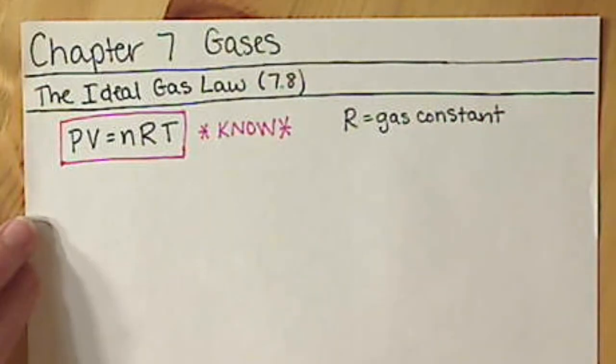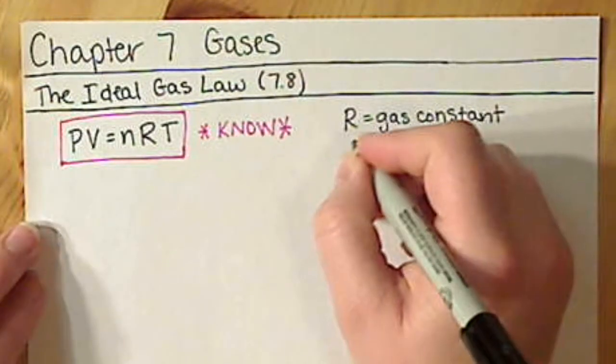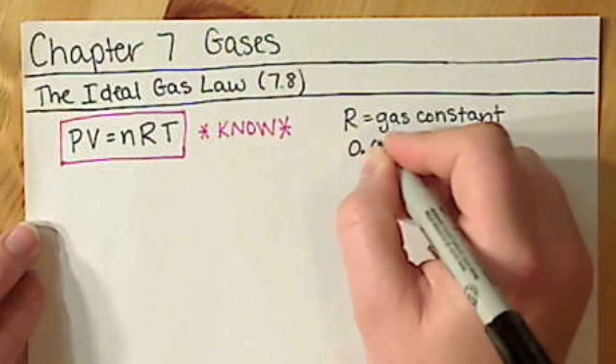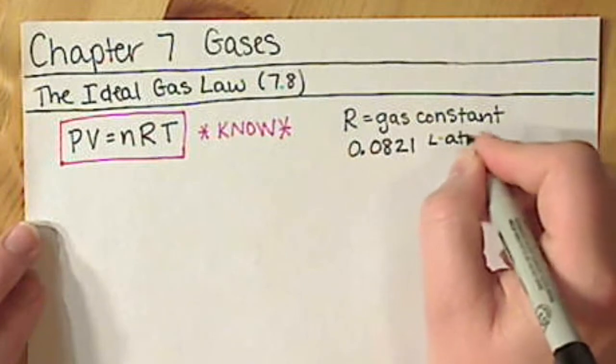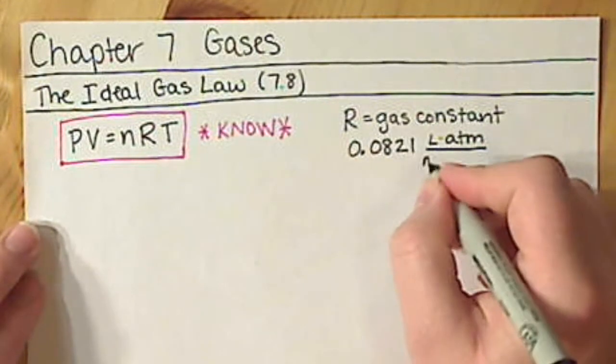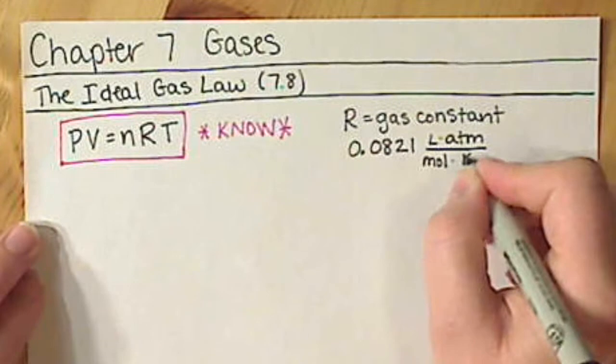There are many different values for R, depending on what units you're using. Your book gives you two of them. That was one of the places to fill out on your pre-lecture worksheet, the value and units of the R gas constant. The one that I recommend putting into your memory bank is 0.0821, and the units on that are liters times atmospheres divided by moles times Kelvin.